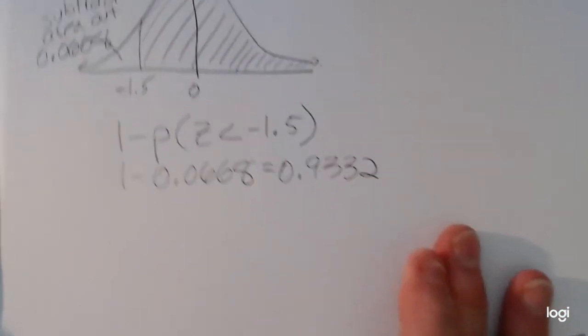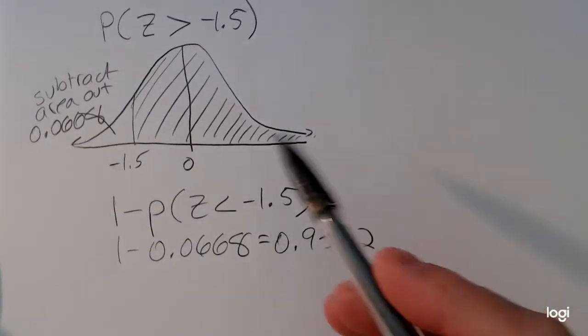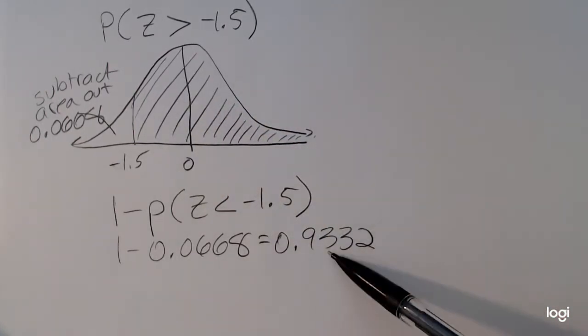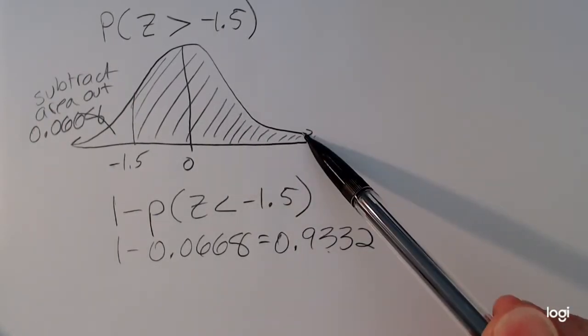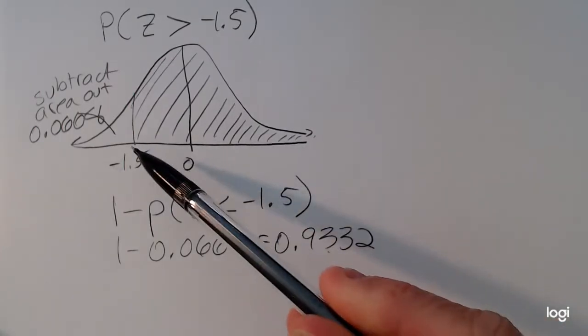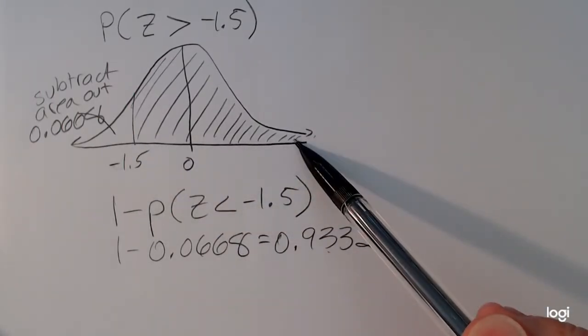So in other words, we shaded about 93.32% of the area. Now looking at what we've shaded, this answer makes sense. I expect the area to be greater than 0.5 because I've shaded well more than half of the area under the curve.